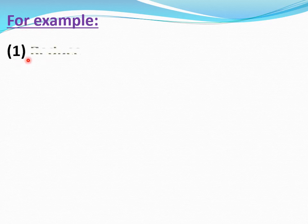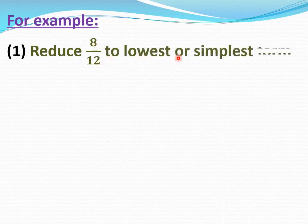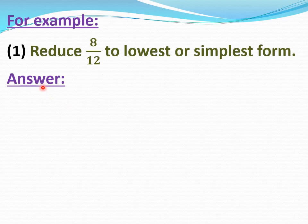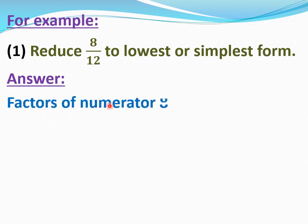Now I will explain to you by an example. See for example, question number 1: reduce 8 by 12 to lowest or simplest form. Factors of numerator 8 equal 1, 2, 4, and 8.